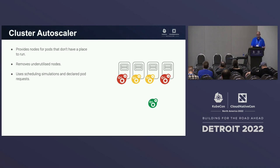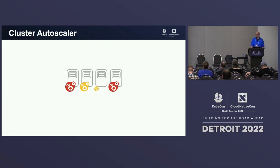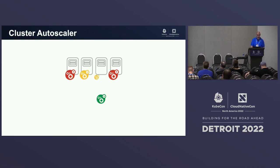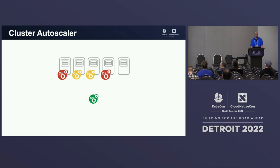Let's look at this in more detail. Here we have four nodes with pods. If a new pod arrives, it can be placed on the third node. But if all nodes are busy, the green pod has no place to go — the scheduler marks it as unschedulable. Cluster Autoscaler waits for this signal, runs simulation, notices that adding one extra node would allow the green pod to go there, talks to your cloud provider, resizes the cluster accordingly, and the scheduler places the pod on the new node.